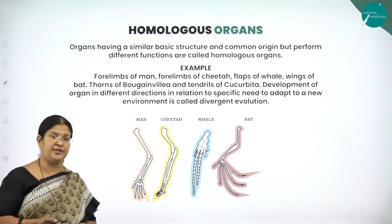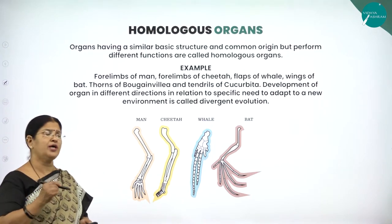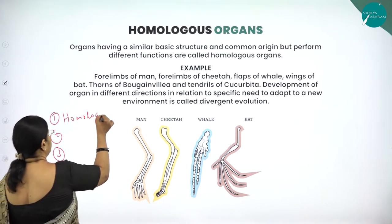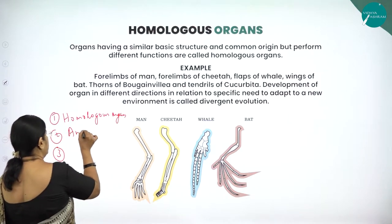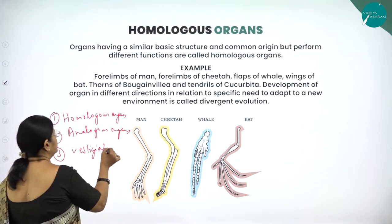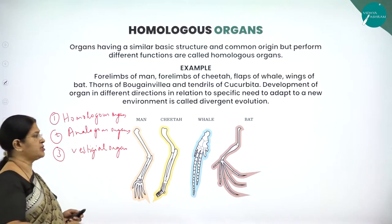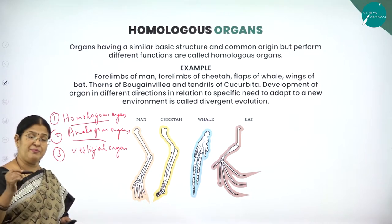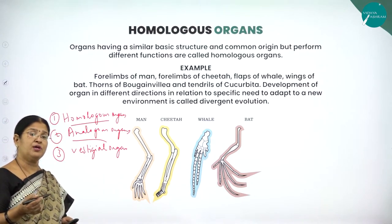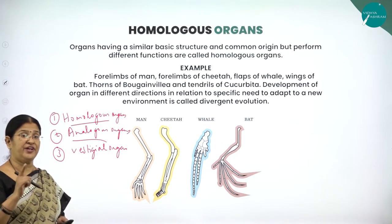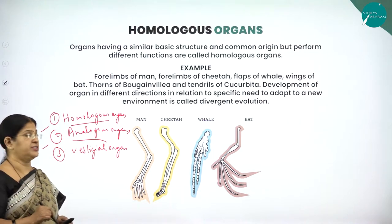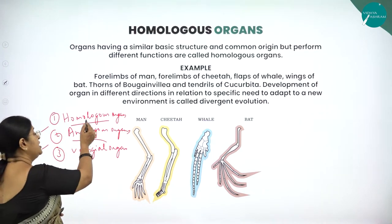Moving on to homologous organs. Organs having a similar basic structure and common origin but performing different functions are called homologous organs. So the origin is the same but the functions differ. Here you can see the picture of homologous organs: same origin, different function.